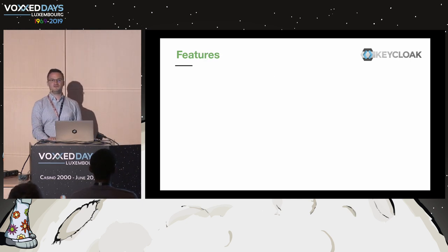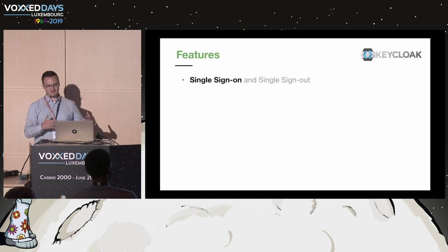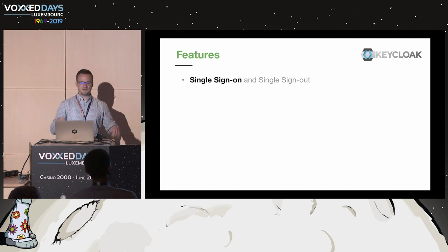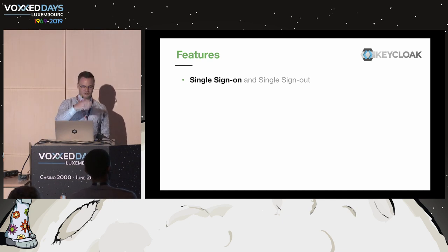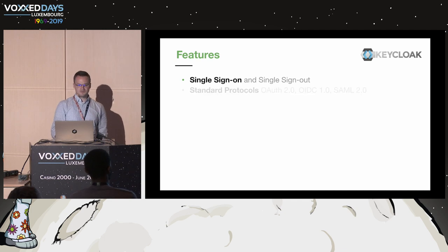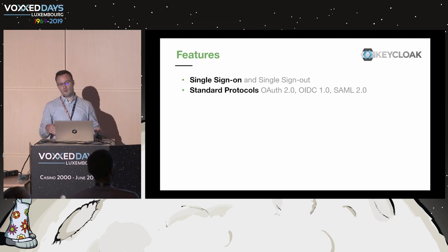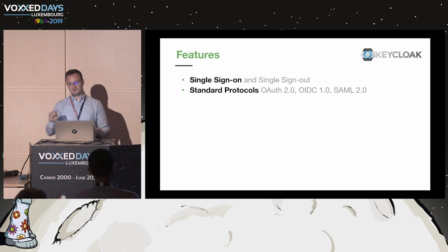What are some of the features that Keycloak gives you out of the box? First and foremost, the most important one is support for single sign-on. That's what we usually want if we have a distributed environment with many different applications and we want to authenticate just once and then use all other applications without any additional re-authentication. The SSO support in Keycloak is based on standardized protocols like OAuth2, OpenID Connect, and SAML2.